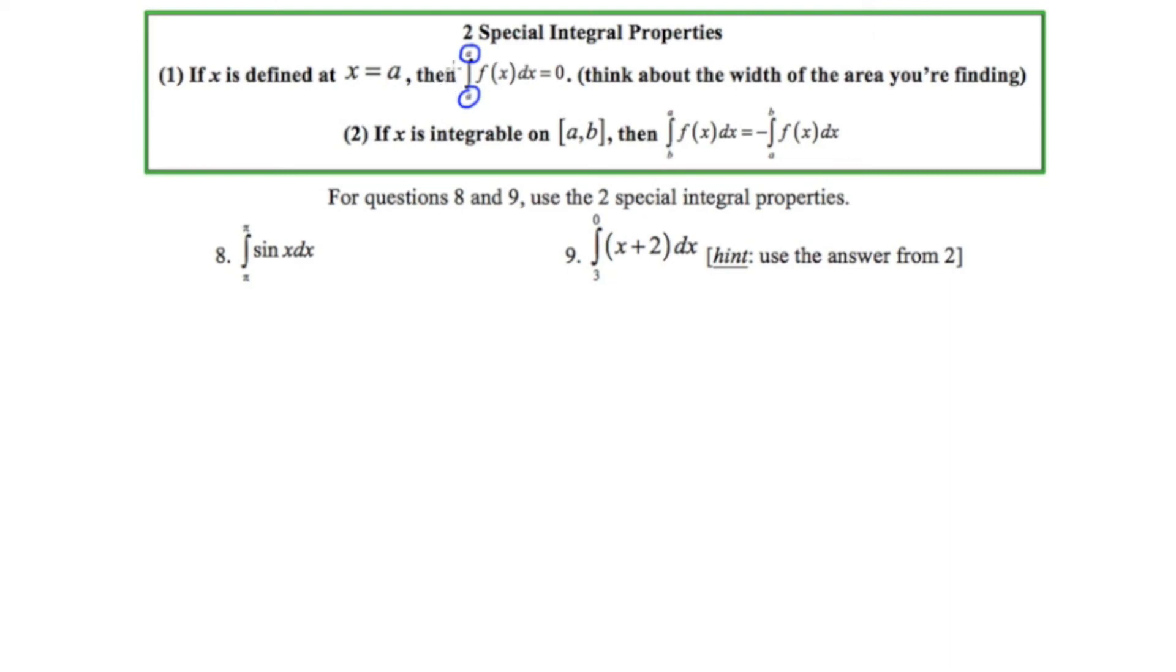Now usually these values represent the width of the region that we're talking about. But if we're starting and ending at the same point there is no width at all which means that the area is going to end up being zero. So if we ever see a definite integral with the lower and upper limits being the same value we're going to get an answer of zero.